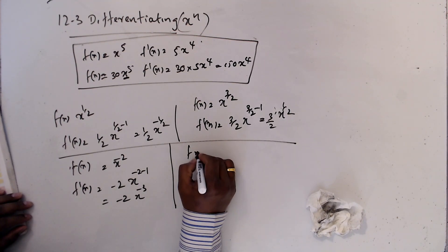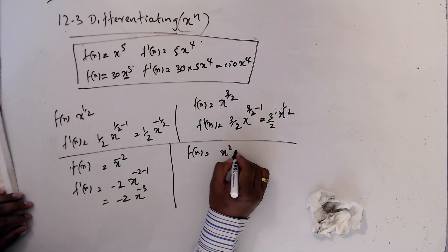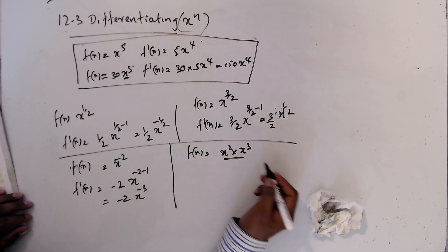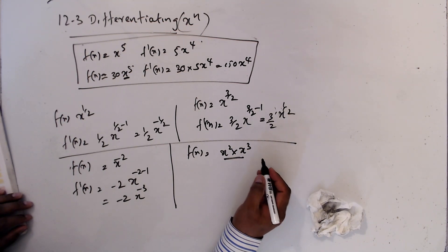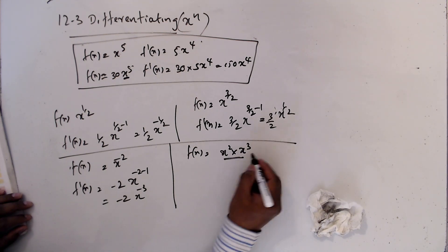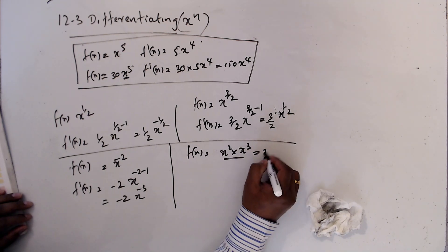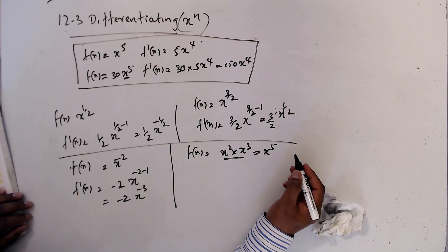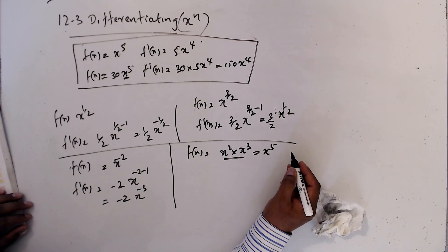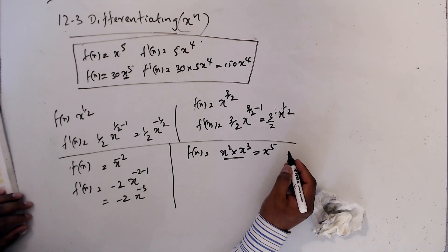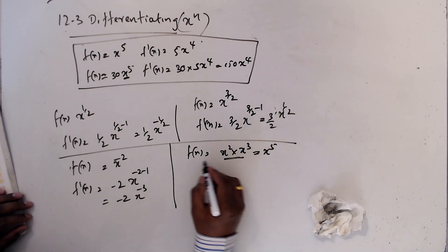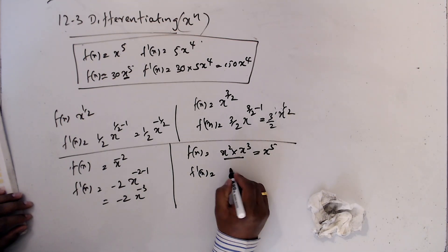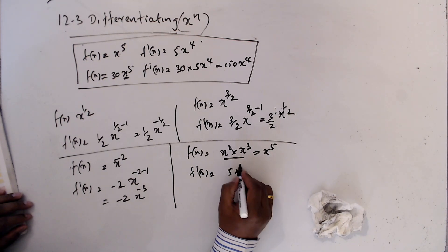Now if f(x) = x² times x³, this is not differentiation yet — this is simplification first. We simplify: x² · x³ = x⁵ (since 2 + 3 = 5). We don't differentiate until it's in one form. Then f'(x) = 5·x⁴.